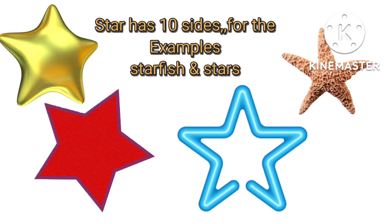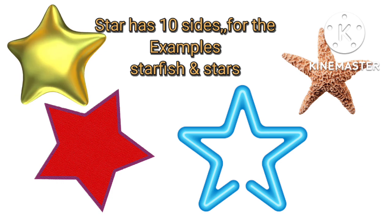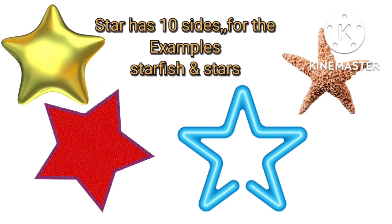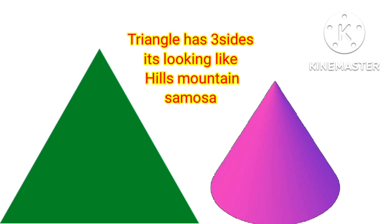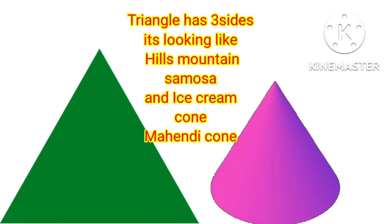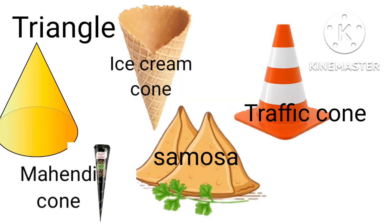Next, Star has 10 sides — for example, starfish. Triangle has 3 sides. This looks like Hills, Mountain, Samosa, Mehdi cone, Trophy cone — triangle.